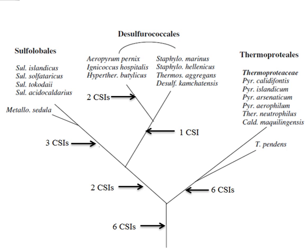The class Gamma proteobacteria forms one of the largest groups of bacteria. It is currently distinguished from other bacteria solely by 16S rRNA-based phylogenetic trees. No molecular characteristics unique to the class or its different subgroups are known. A detailed CSI-based study was conducted to better understand the phylogeny of this class. A phylogenetic tree based on concatenated sequences of a number of universally distributed proteins was created. The branching order of the different orders of the class Gamma proteobacteria, from most recent to the earliest diverging, was: Enterobacteriales, Pasteurellales, Vibrionales, Aeromonadales, Alteromonadales, Oceanospirillales, Pseudomonadales, Chromatiales, Legionellales.